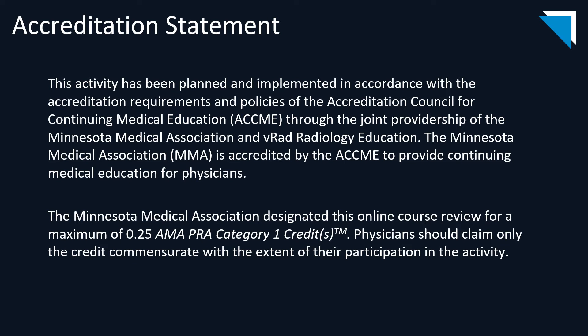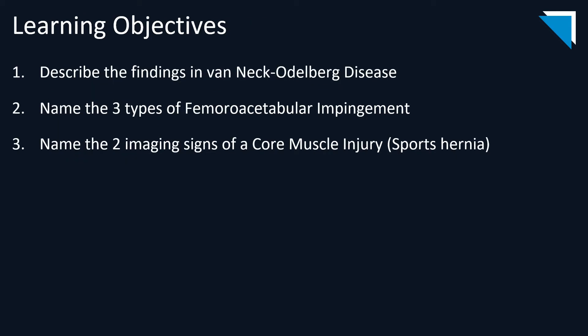This module is accredited for 0.25 AMA category 1 credits. Today we're going to have three learning objectives: describe the findings of Van Neck-Oldenburg disease, name the three types of femoroacetabular impingement, and name the two imaging signs of a core muscle injury, otherwise known as a sports hernia.